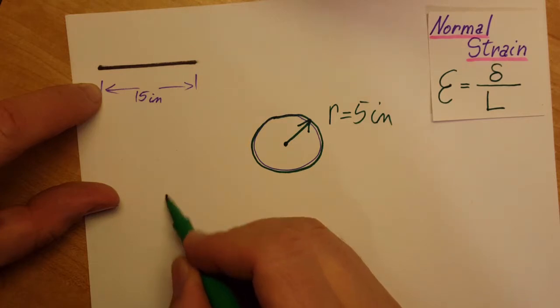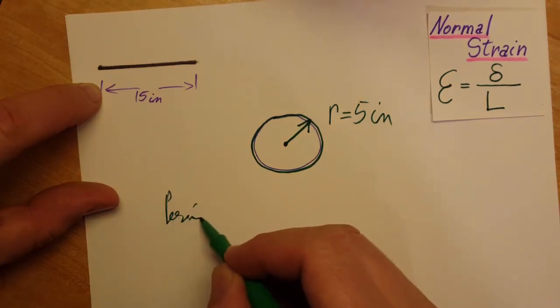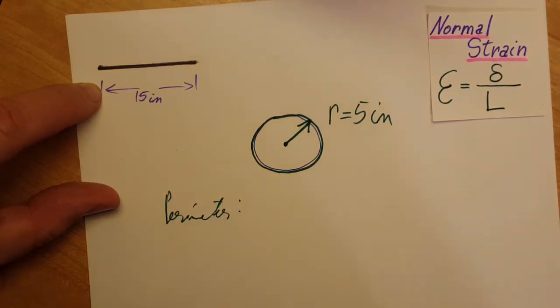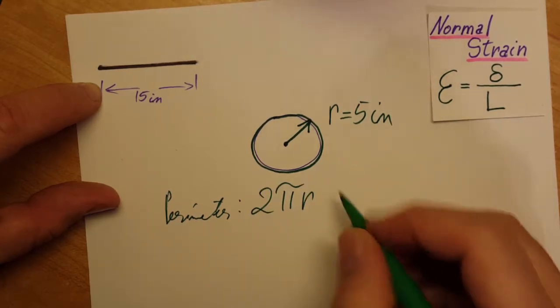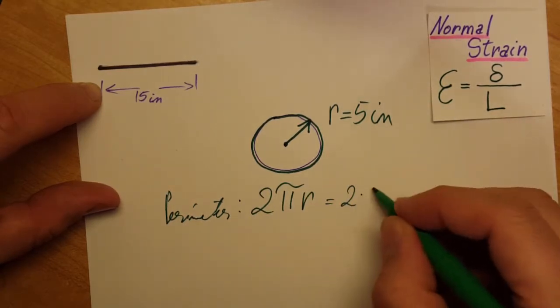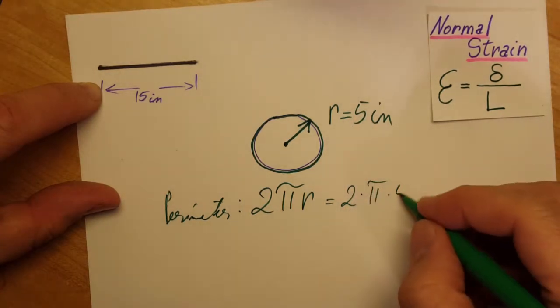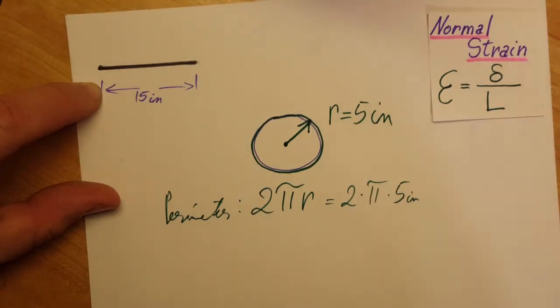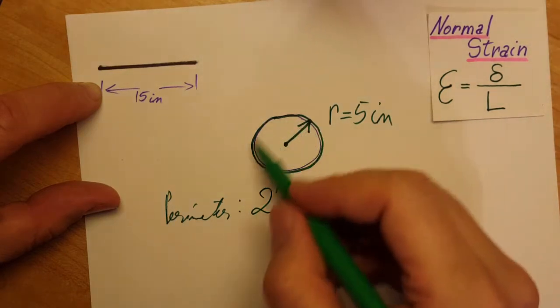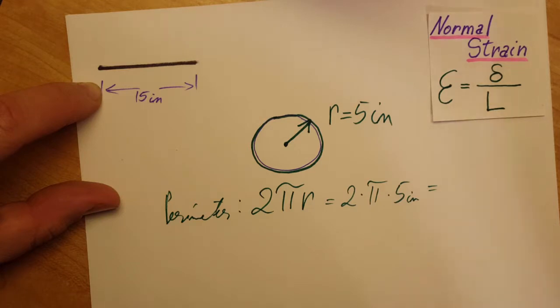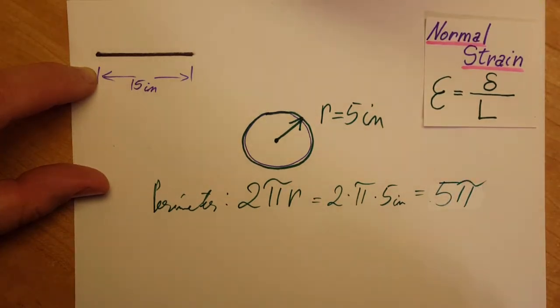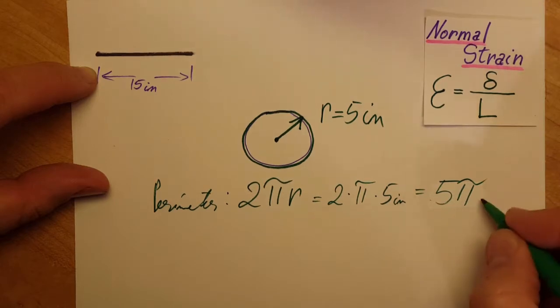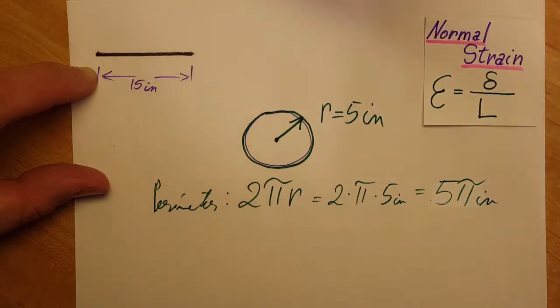The perimeter will be equal to 2 pi r, and this will give us 2 times pi times r, which is 5 as the problem stated, 5 inches. This will give us a length for our rubber of 5 pi. I'm just gonna leave it with pi in it; we can calculate that with the calculator.